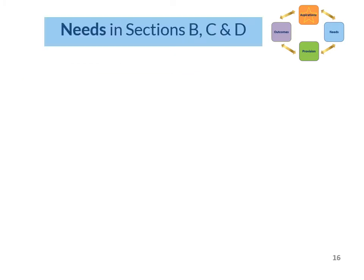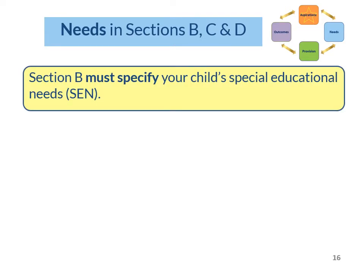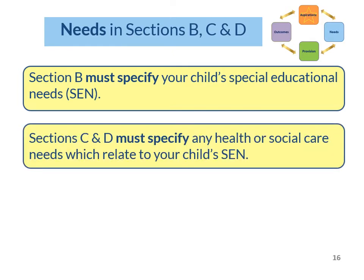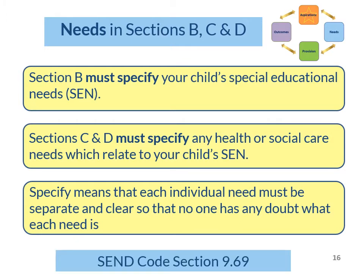In your child's plan there are three sections describing your child's needs: Sections B, C and D. Section B must specify your child's special educational needs, or SEN. Sections C and D must specify any health or social care needs which relate to your child's SEN. 'Specify' means that each individual need must be separate and clear so that no one has any doubt what each need is.